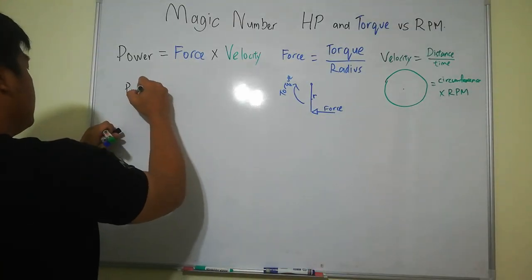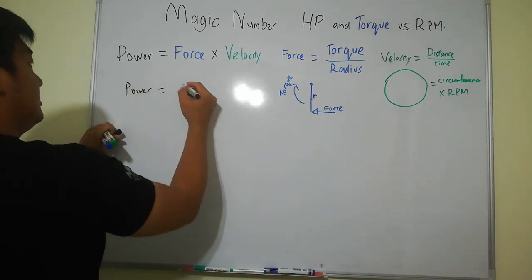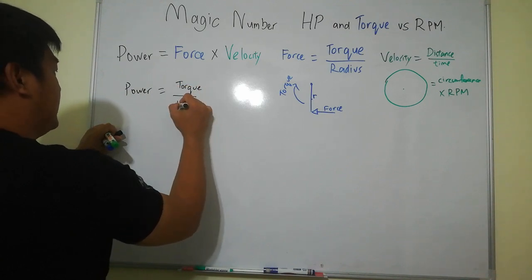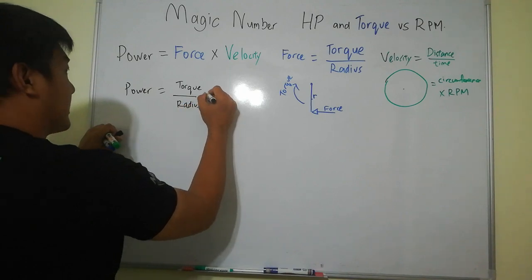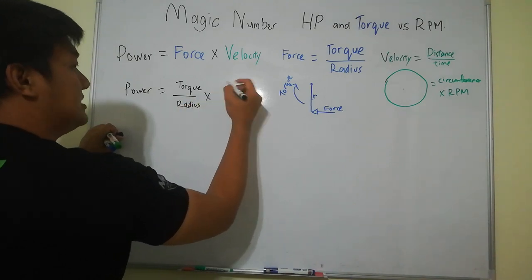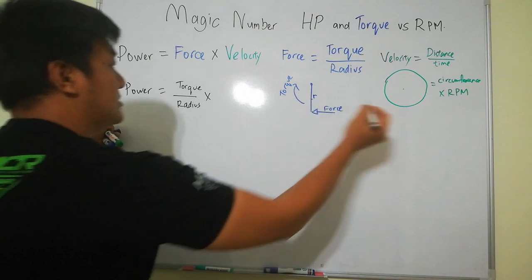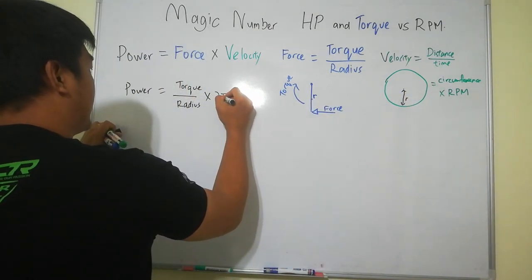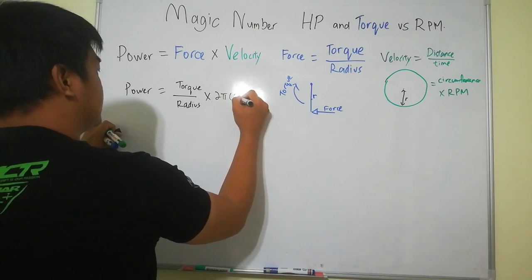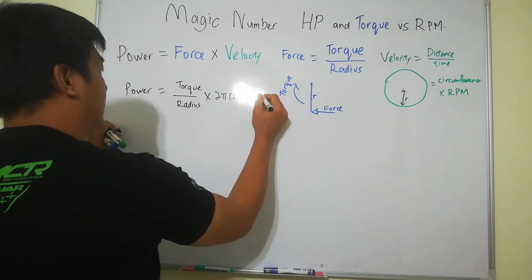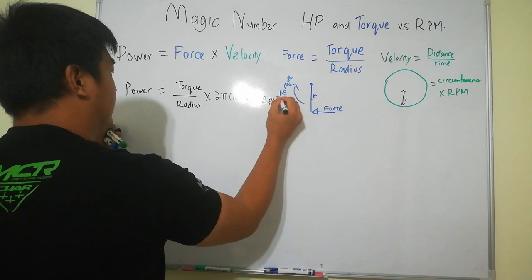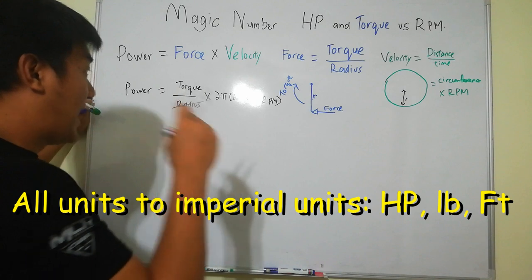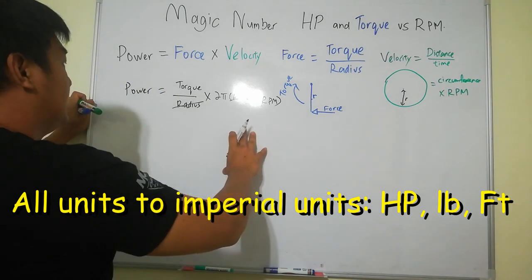Power equals to torque divided by radius times circumference is 2 pi times radius. If this one is the radius so 2 pi times radius times RPM. So radius and radius cancel. So power, if I want to change everything into one horsepower.